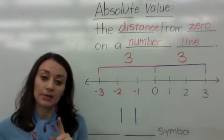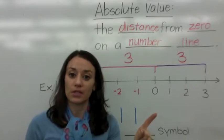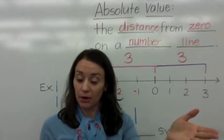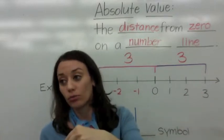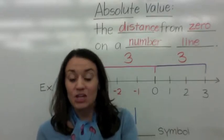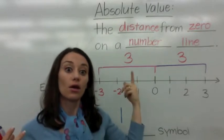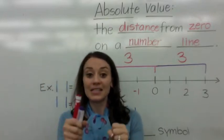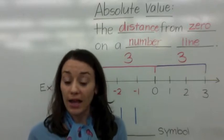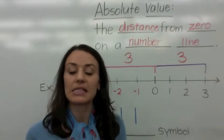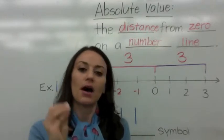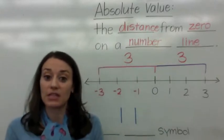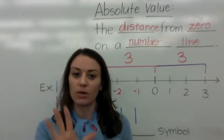Think about it like this. Let's say it takes you three miles to get from your house to school. Once you get to school and get picked up to go back home, it's still three miles, right? So the total distance would be three plus three — six miles. Just because you go backward does not mean that that is a negative number. Distance is always positive.